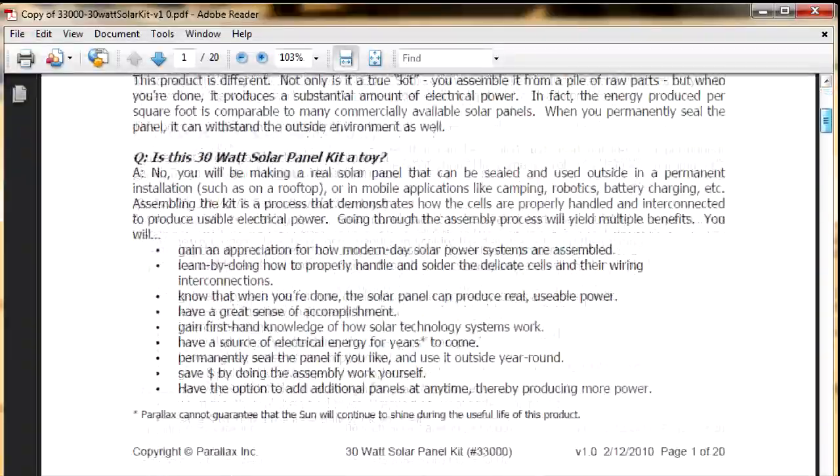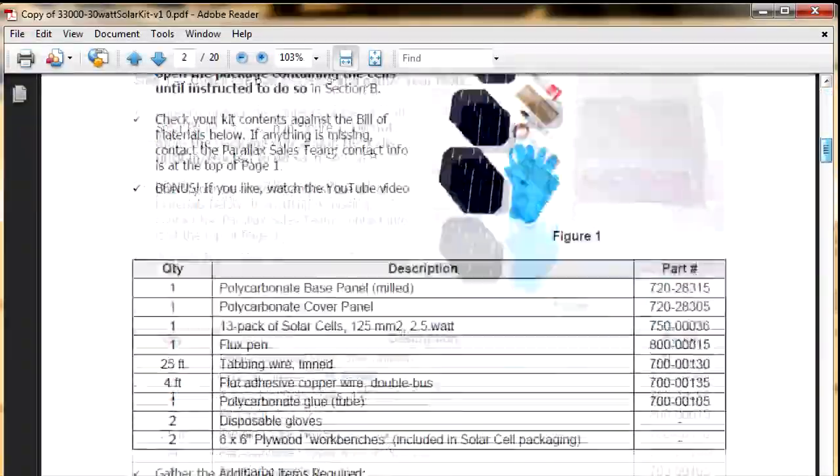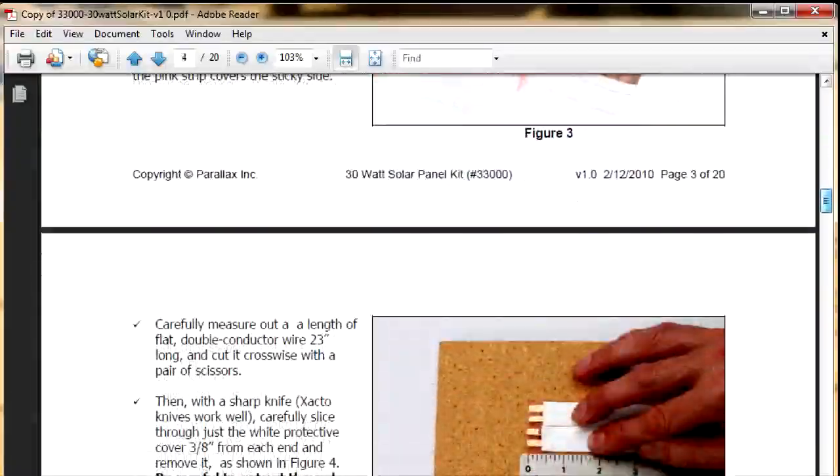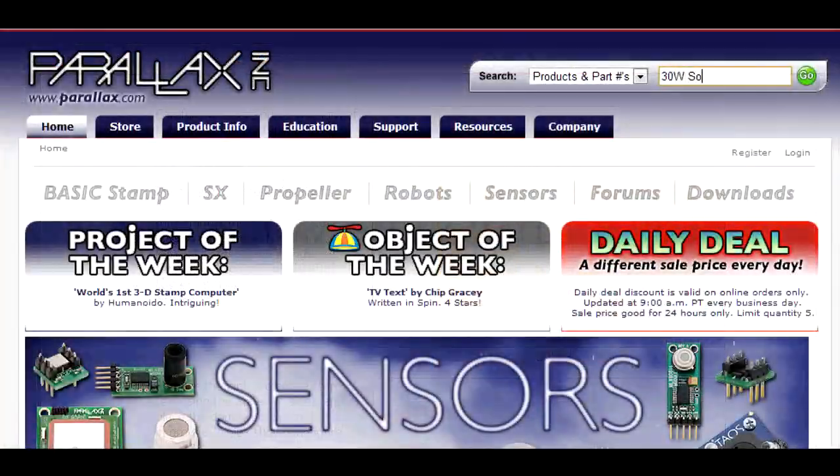It's going to be very important as we assemble our solar panel that we follow the included documentation very carefully. Now documentation should have been included with your kit, but if you've misplaced it or need to print out another copy, you can always do a product search on parallax.com.